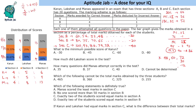If Section C = 72, then using ratio 4:5:6, Section A = 48 and Section B = 60. If Section C = 30, then Section A = 20 and Section B = 25. If Section C = minus 12, then Section A = minus 8 and Section B = minus 10. So Karun has three possible score sets. The minimum possible total score for Karun is minus 30.